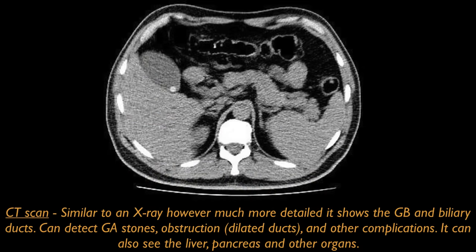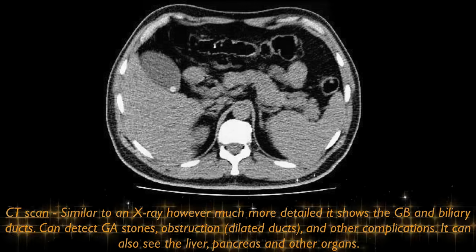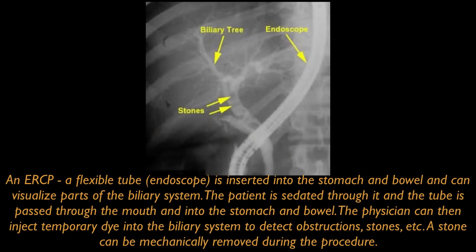CT scan: similar to an X-ray but much more detailed, it shows the gallbladder and biliary ducts. It can detect gallbladder stones, obstruction, dilated ducts, and other complications. It can also visualize the liver, pancreas, and other organs. An ERCP: a flexible tube called an endoscope is inserted into the stomach and bowel and can visualize parts of the biliary system. The patient is sedated and the tube is passed through the mouth into the stomach and bowel. The physician can then inject dye into the biliary system to detect obstructions, stones, etc. A stone can also be mechanically removed during this procedure.